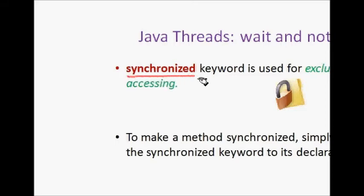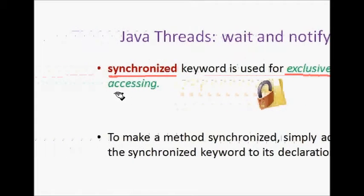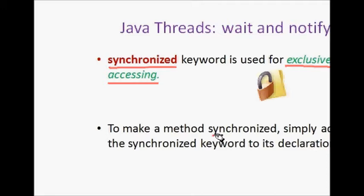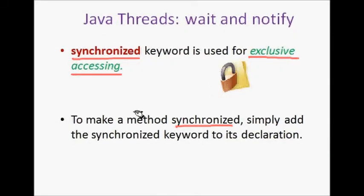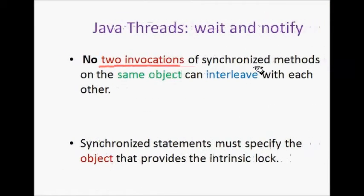First, we should look at the synchronized keyword. If you write a method with a synchronized keyword, it means it is an exclusive access method. What does it mean to make a method synchronized? It means that if there are three synchronized methods on one particular object, these methods cannot be interleaved.